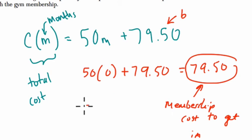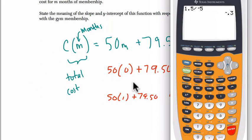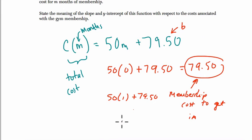Then when the months start adding in, so 50 times 1 plus 79.50, now you've got 79.50 plus one group of 50. So it's 50 plus 79.50. That's $129.50 after one month.